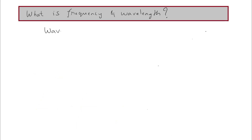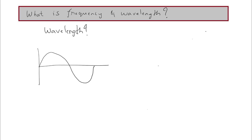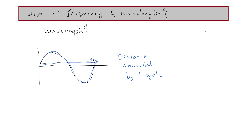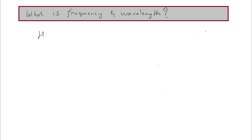What is wavelength? Wavelength is the distance traveled by one cycle — that is one high peak and one low peak. It is the distance traveled by one complete cycle. Since it is a distance, the unit would be meters. So the wavelength is measured in meters.